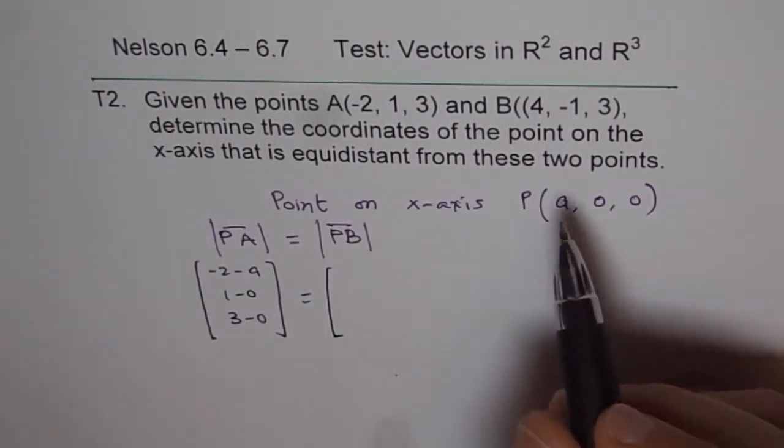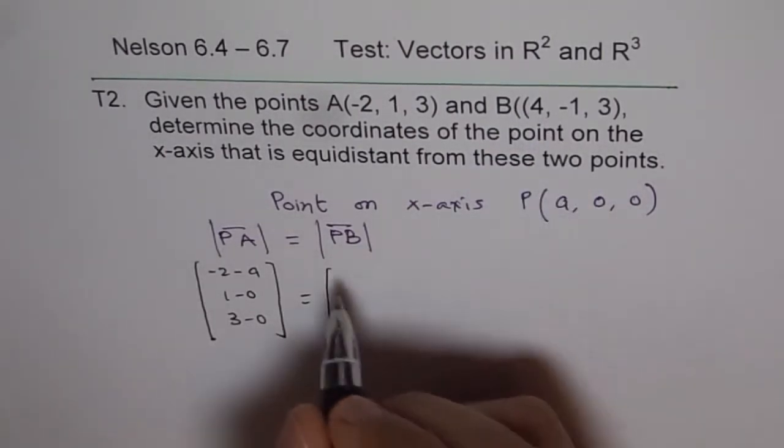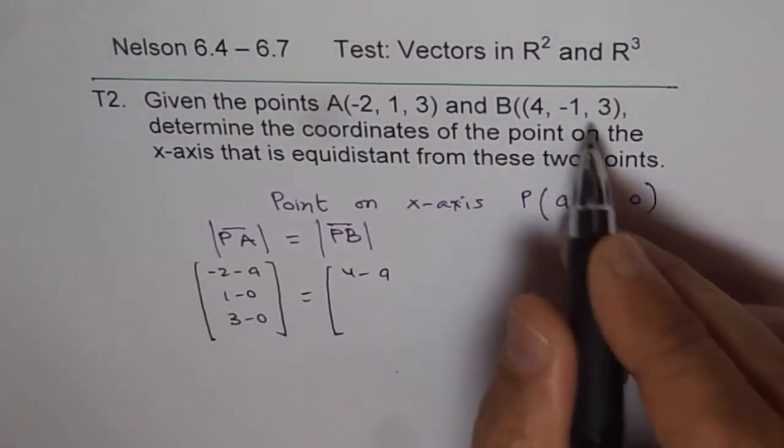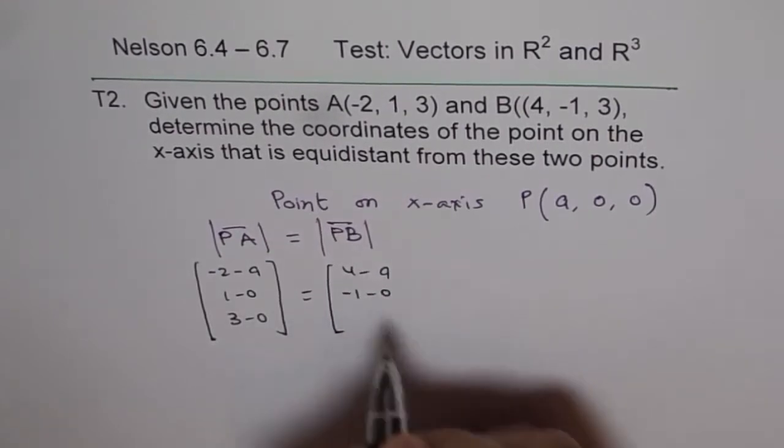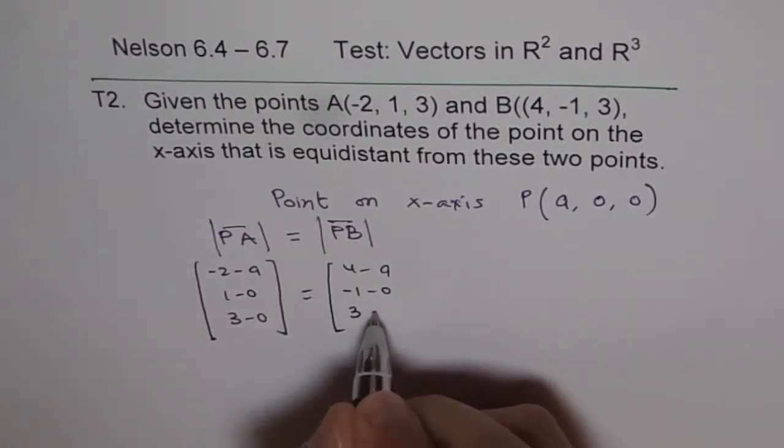P to B means 4 minus A, minus 1 minus 0, and 3 minus 0.